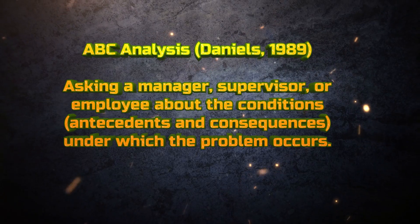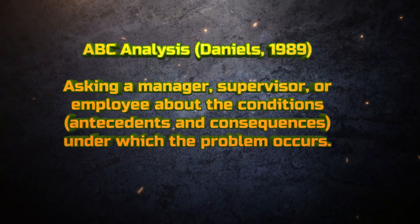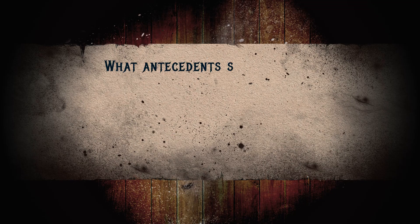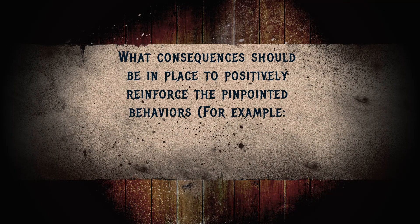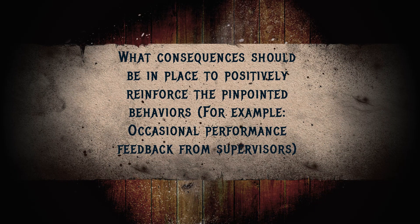With that said, let's take a look at the four contingencies for the performer level, again provided by King and Kieran 2021. Number one, antecedents for the pinpointed behaviors — we need to ask what antecedents should be in place to prompt the pinpointed behaviors, for example written expectations or clear goals. Number two, consequences for the pinpointed behaviors — what consequences should be in place to positively reinforce the pinpointed behaviors, for example occasional performance feedback from supervisors.